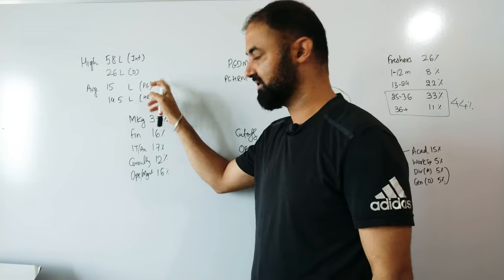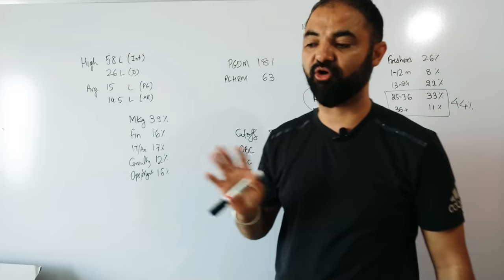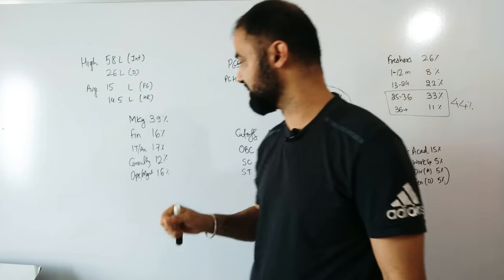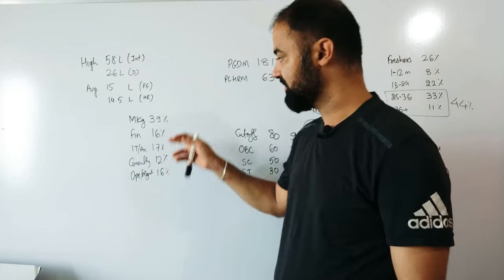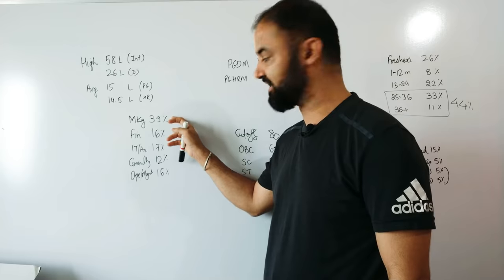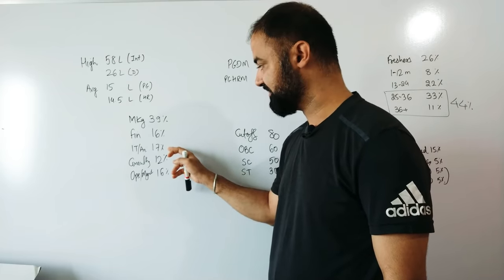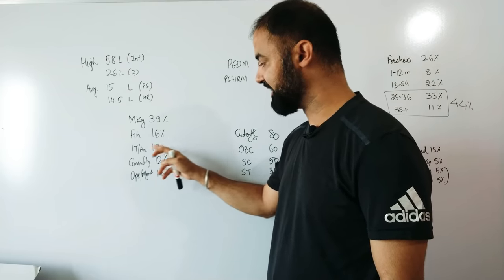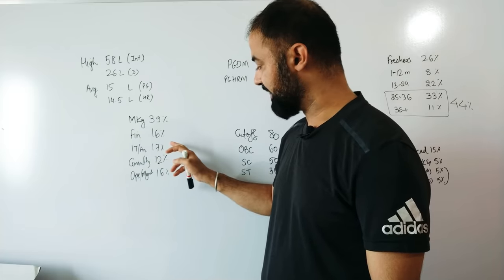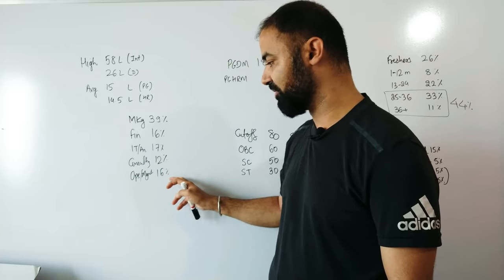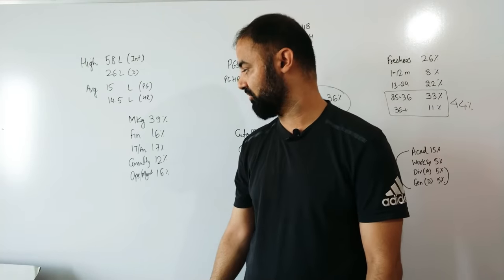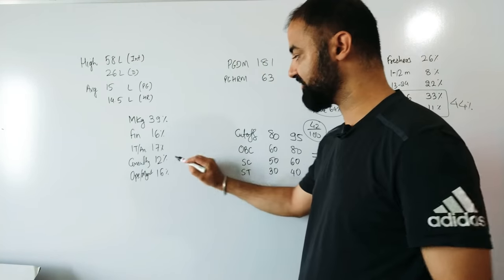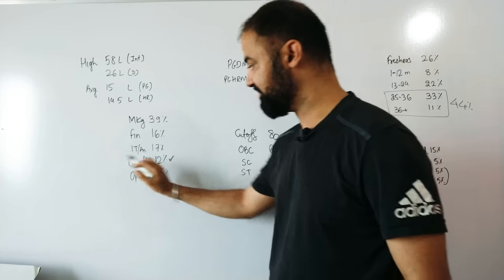Moving to the placement scenario: average is around 15 lakhs, same for IIM Ranchi and all the new IIMs. Marketing: 39% of batch is placed. Finance: 16%. IT and analytics: 17%. Consulting: 12%. Operations and general management: around 16%. That's a typical breakup.